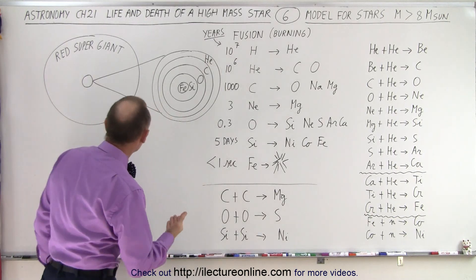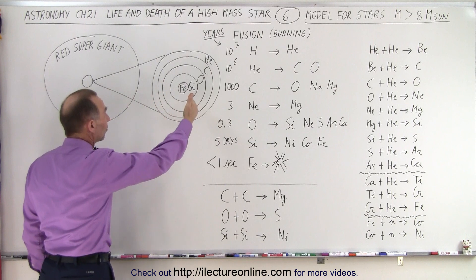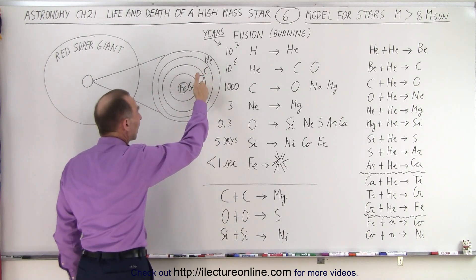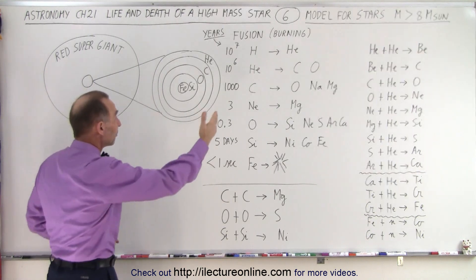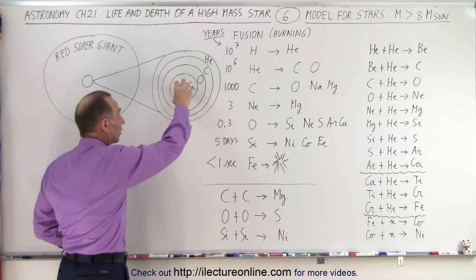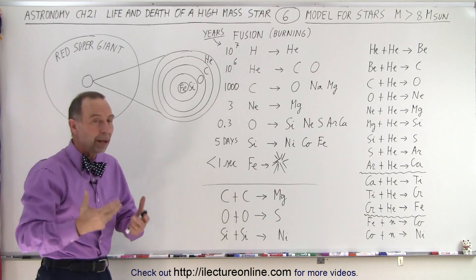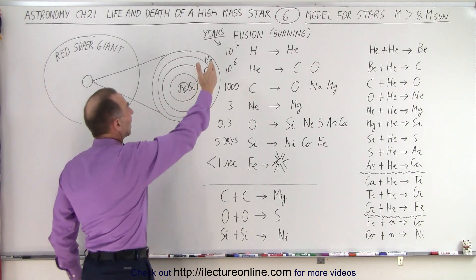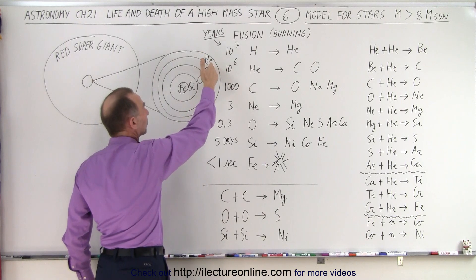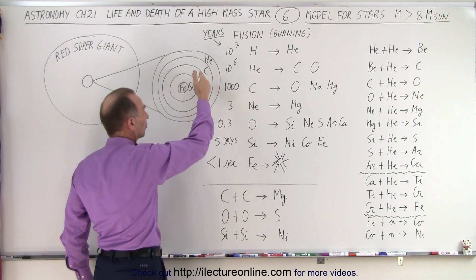So what you end up with then is you end up with kind of like a shell system, where higher and higher elements or more massive and more massive elements are being fused as time goes on, as temperatures are going up and up inside the core. So we end up with these regions where we have hydrogen burning into helium, helium burning into carbon, carbon burning into oxygen, and so forth.